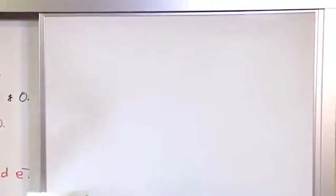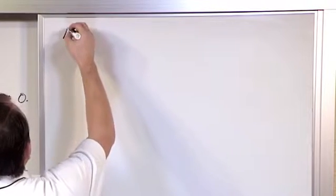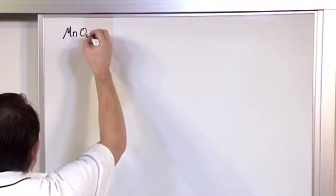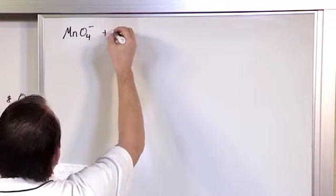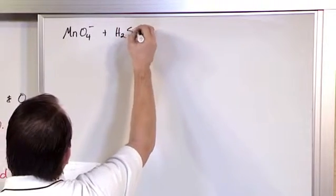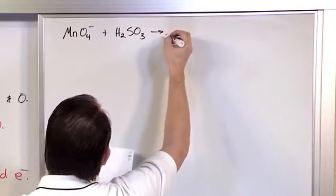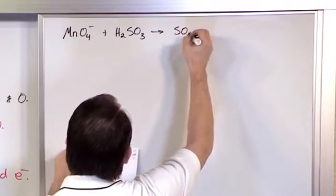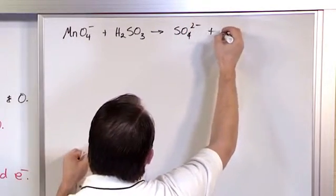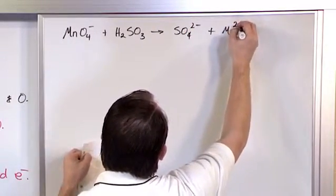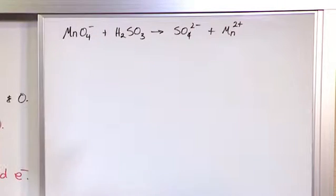So let's jump right in. We have MnO4- plus H2SO3 yields SO4 2- plus Mn2+. All right, so that's what we have.